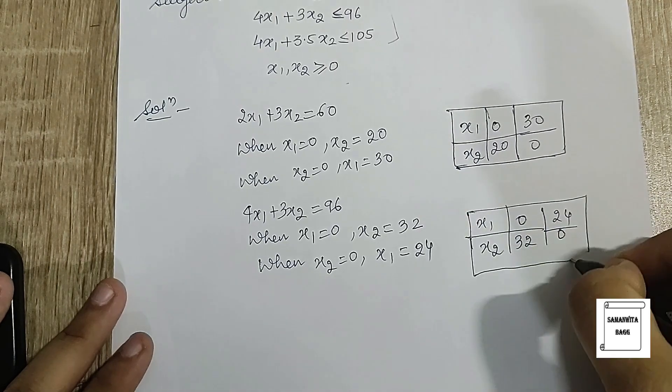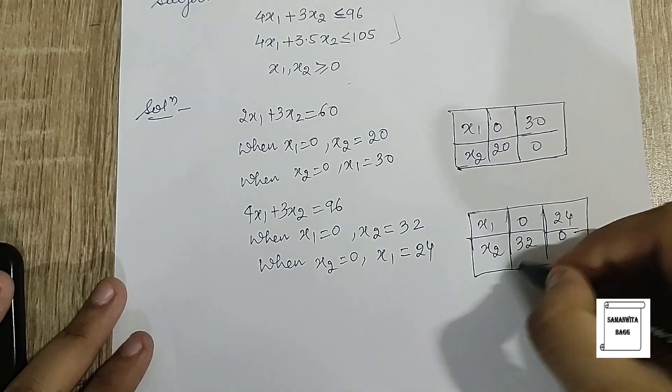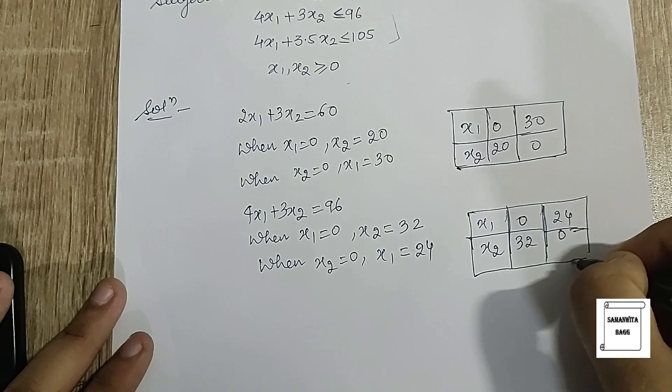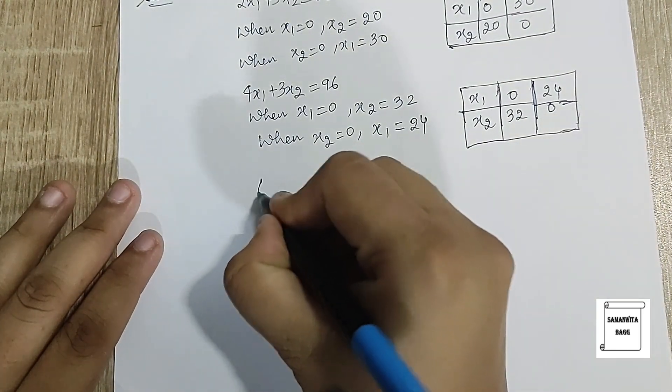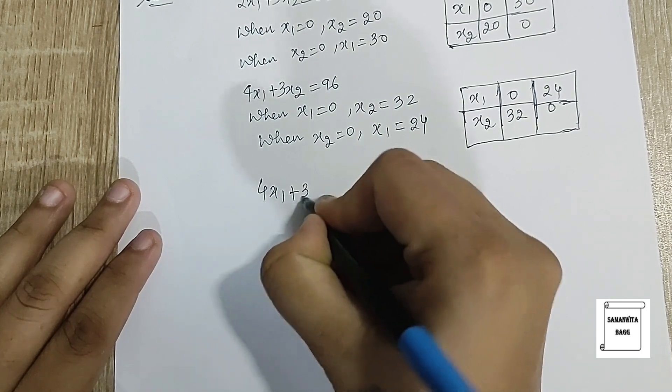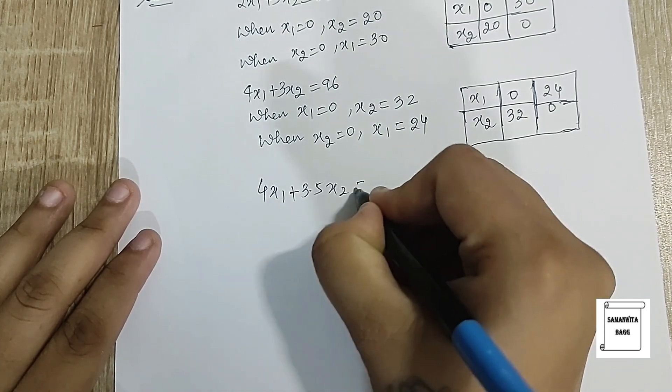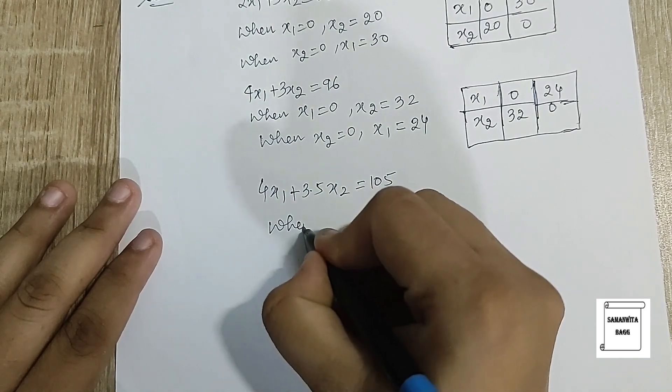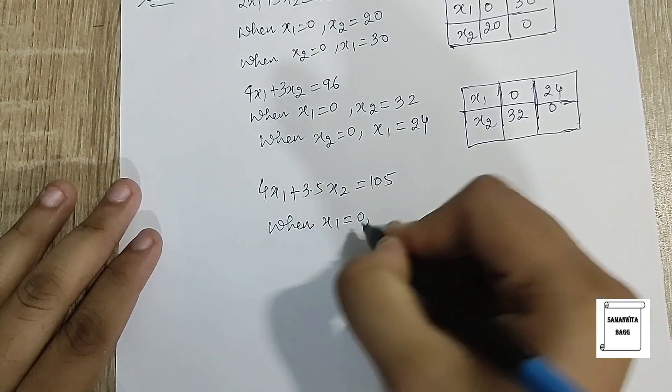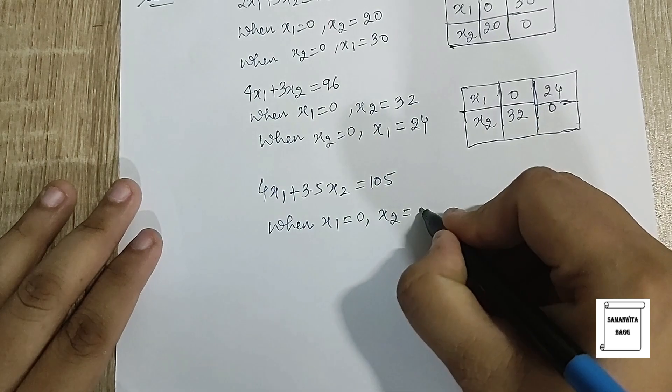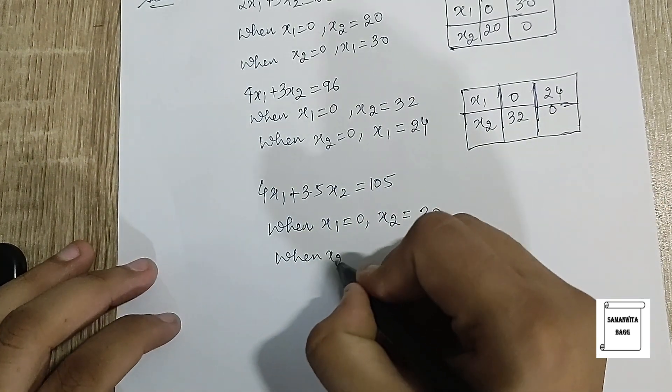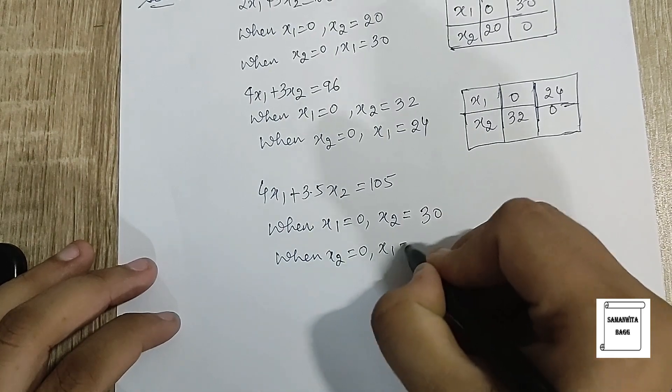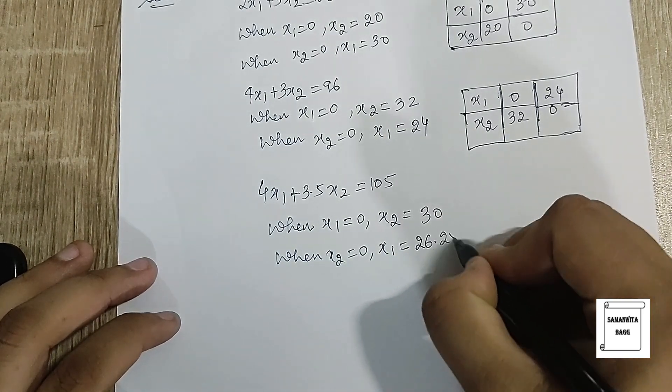So these are the two points from this equation that I need to plot. Now let's go for the last equation: 4x₁ + 3.5x₂ = 105. When x₁ is 0, x₂ will be 30, and when x₂ is 0, x₁ will be 26.25.